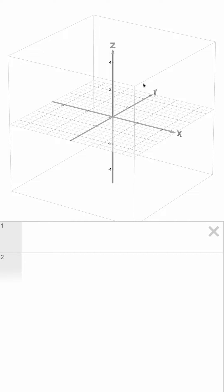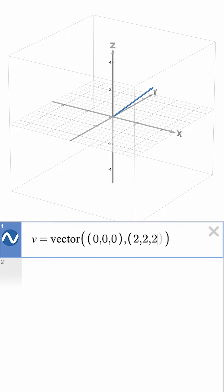In the 3D calculator, you can graph a vector by using the vector command. Let's name our vector v and define it using two points, 0 0 0 and 2 2 2.